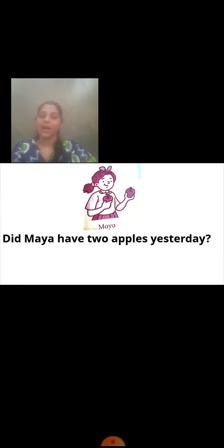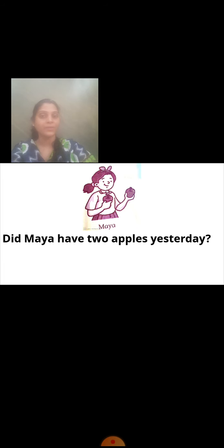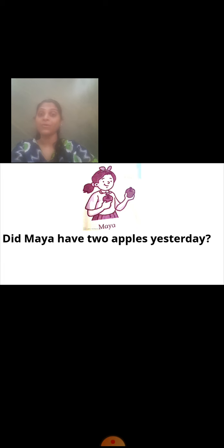Did Maya have two apples yesterday? Look at the picture — that girl is having apples in her hand and her name is Maya. How many apples is she having in her hand? Two apples. The question is asking about yesterday, which means something that has already happened. So we will write the answer in the past tense.